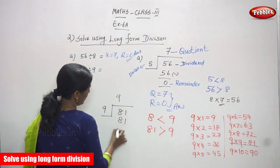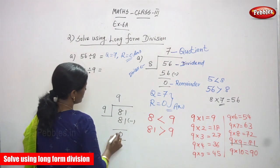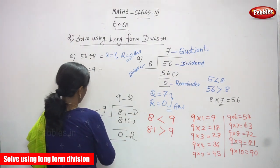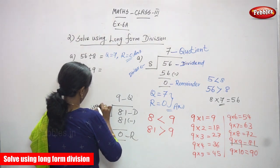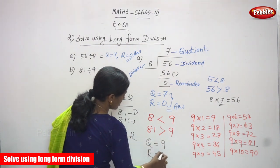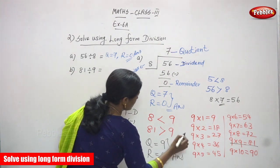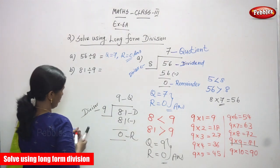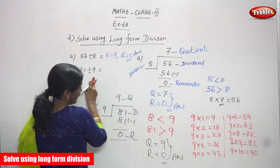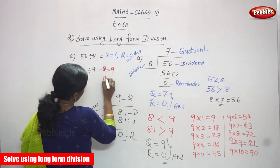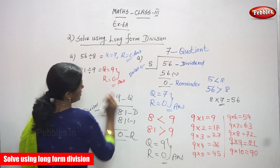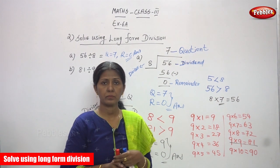81 minus 81 gives 0. So the quotient is 9 and the remainder is 0. This is the divisor, dividend, quotient, and remainder. The answer for the second question: quotient is 9 and remainder is 0. Thank you.